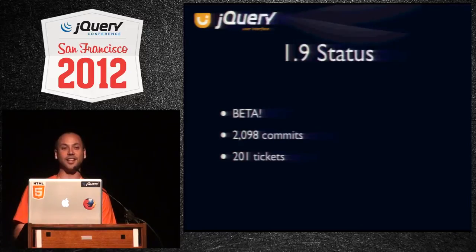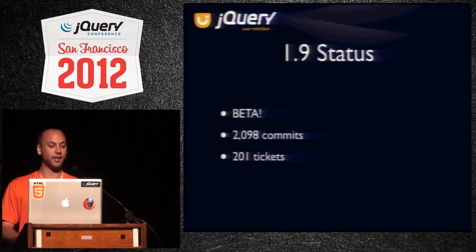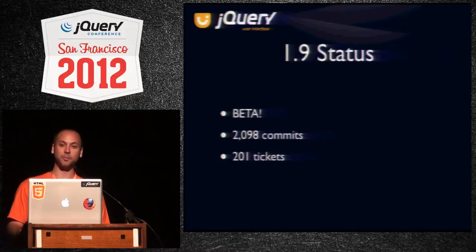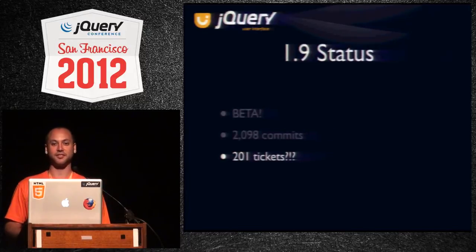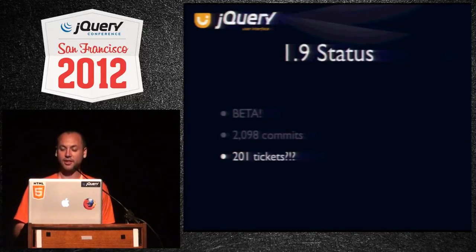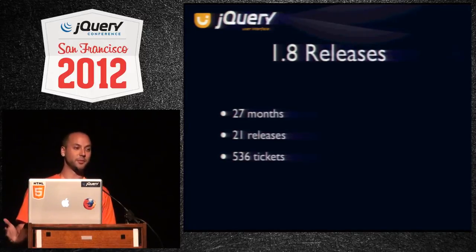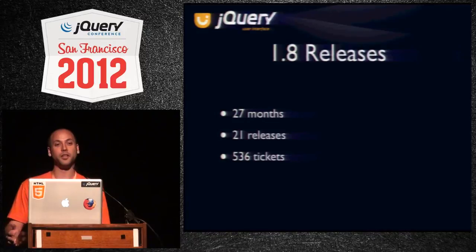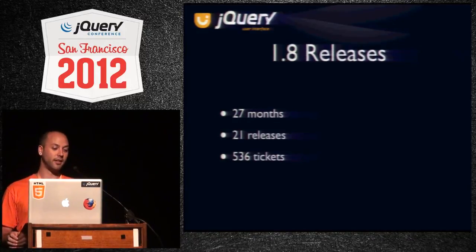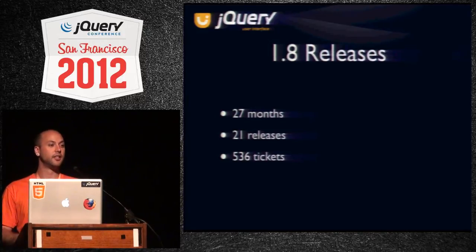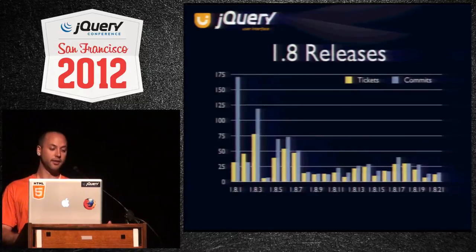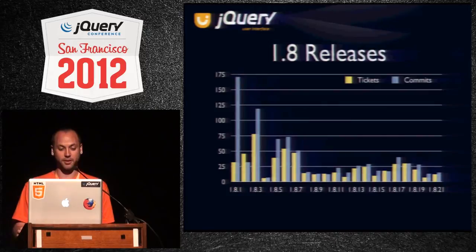We have 2,098 commits going into 1.9 and 201 tickets, which probably those numbers don't make sense. Why did it take us two years and 2,000 commits to get 200 tickets fixed? The reason that happened is because of all the 1.8 releases. In the past 27 months, we've actually done 21 point releases for 1.8, and within those 21 releases we fixed 536 tickets. So the true story from 1.8 to 1.9 is quite a bit different than just 200 commits and 200 tickets.